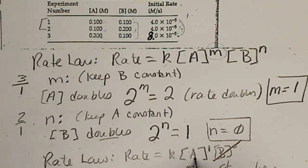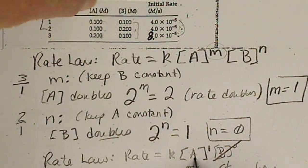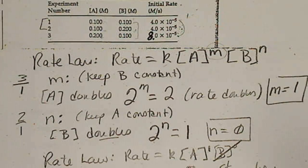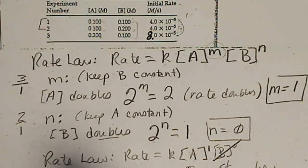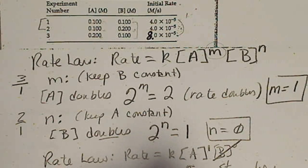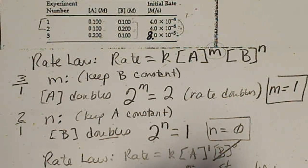And we'll solve for K when we plug in the appropriate value for A. So now to solve for K, rate, the rate is 4 times 10 to the negative 5th equals K times 0.100 to the first power.